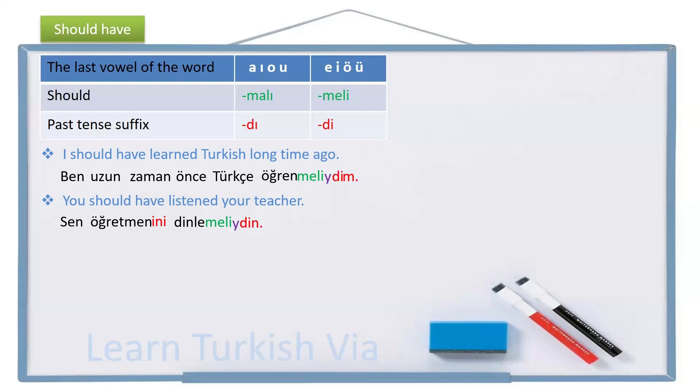Another sentence. He should have studied more for the exam, but he didn't and he failed and he regrets about it. So, he, o, exam, sınav, for the exam, sınav için, more, daha fazla. Study, ders çalış.